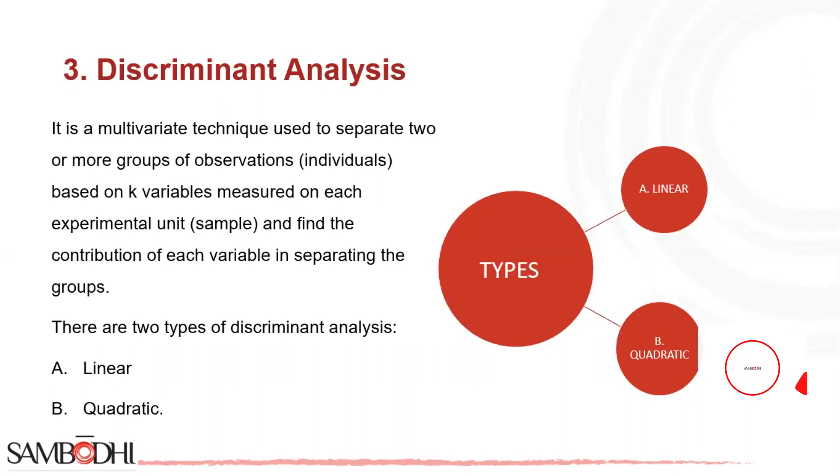In addition, the prediction or allocation of newly defined observations to previously specified groups may be examined using a linear or quadratic function for assigning each individual to existing groups. This can be done by determining which group each individual belongs to.